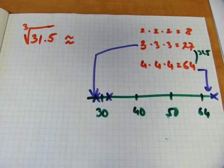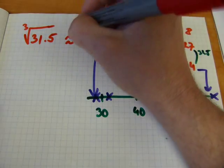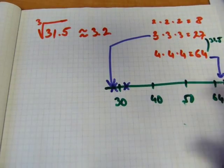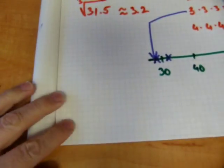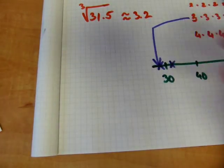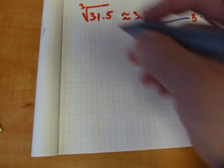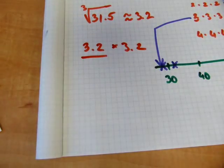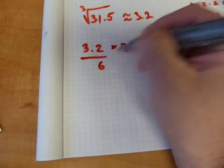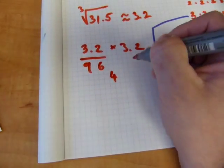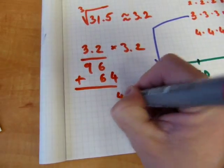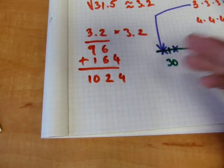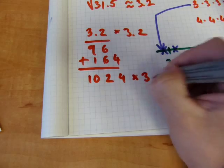On this scale, the cube root of 31.5 will be close to 3 and far from 4. So 3.1 or 3.2 are reasonable estimates. If you put down 3.2, that will get you top marks. You need to multiply it back to verify, but for a cube root you need two multiplications instead of one. First: 3.2 times 3.2 using lattice multiplication.